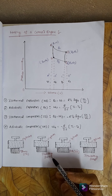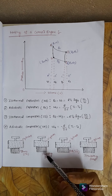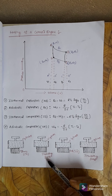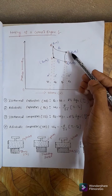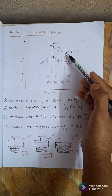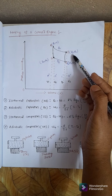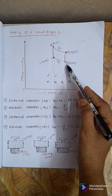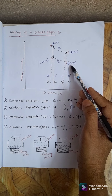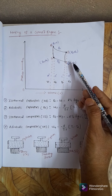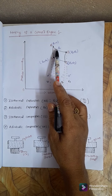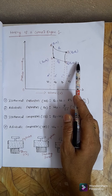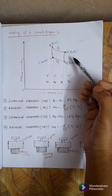For adiabatic expansion, the source is replaced by an insulating stand, and the cylinder is placed over it. Expansion is allowed to take place from point B to point C. At point B we have pressure P2 and volume V2; after expansion to point C, pressure decreases to P3, volume increases to V3, and temperature falls to T2.